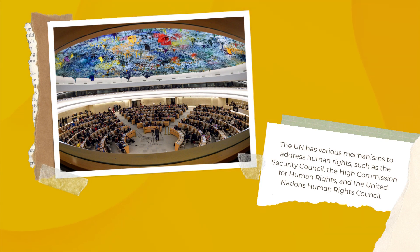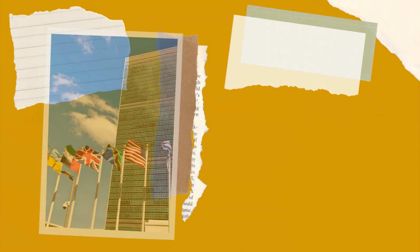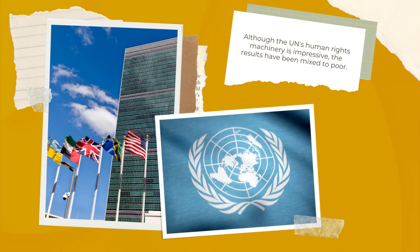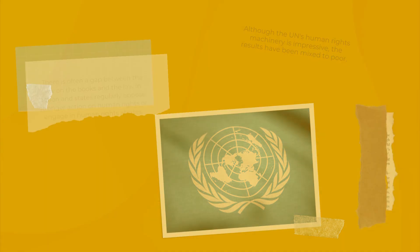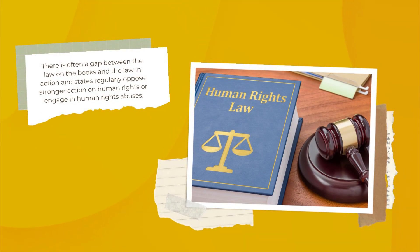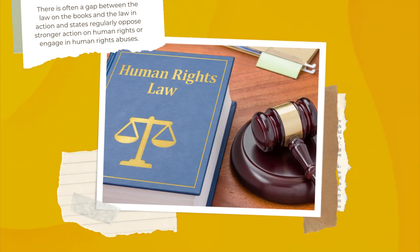The UN has various mechanisms to address human rights, such as the Security Council, the High Commission for Human Rights, and the United Nations Human Rights Council. Although the UN's human rights machinery is impressive, the results have been mixed to poor. There is often a gap between the law on the books and the law in action, and states regularly oppose stronger action on human rights or engage in human rights abuses.